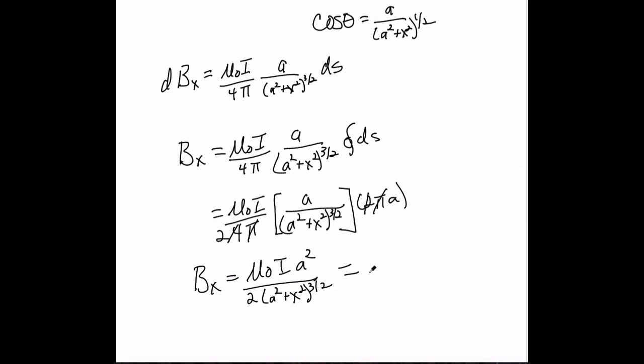And then this expression becomes, so that's A squared to the three halves power, right? So mu naught I, we have an A squared on top, and we have an A squared to the three halves power on the bottom, so an A cubed. So all over 2A, A squared divided by A squared to the three halves power. So A squared over A cubed, one over A.